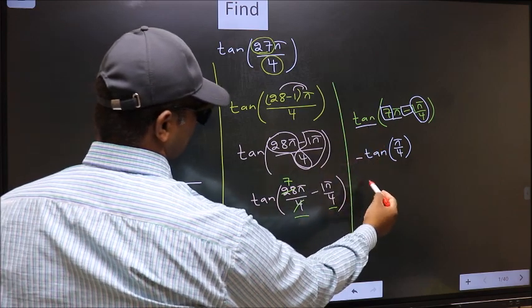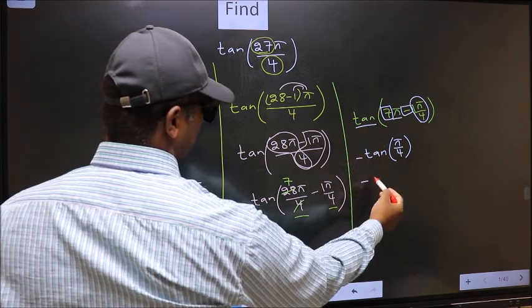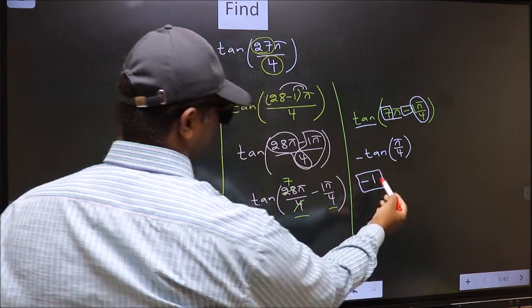So, we should put negative. So, negative tan π by 4 is 1. This is our answer.